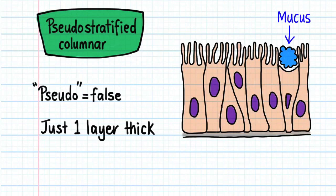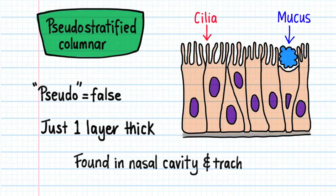Pseudostratified columnar epithelium secretes a sticky mucus and has cilia on its surface. It's found in the nasal cavity and trachea.